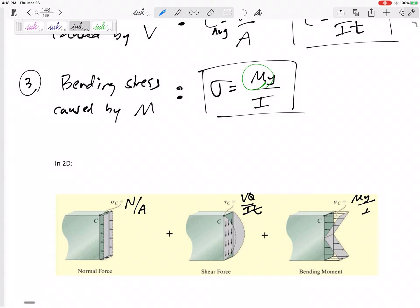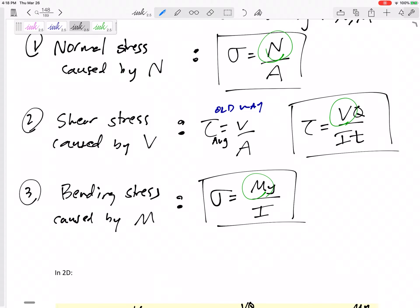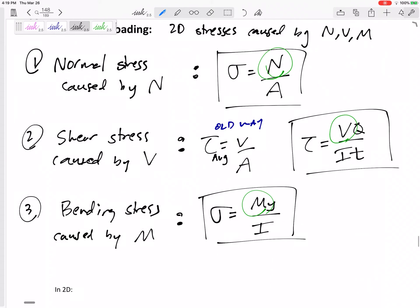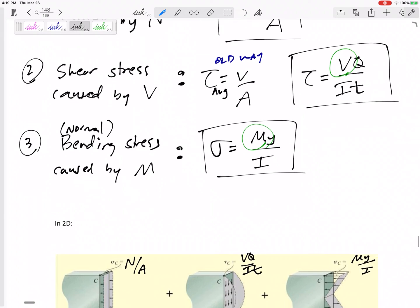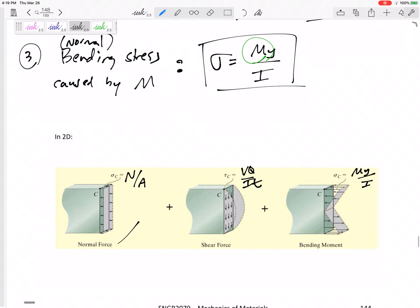This would be MY over I. And do you see that both of these are sigmas? Both of these are perpendicular to the cut. They're compression or tension. They create elongation or contraction. This is a normal stress caused by M. And so we can combine, we can add the normal stress caused by N and the normal stress caused by M. We can add them together because they're the same type of stress, right? They are normal stresses. They are perpendicular.